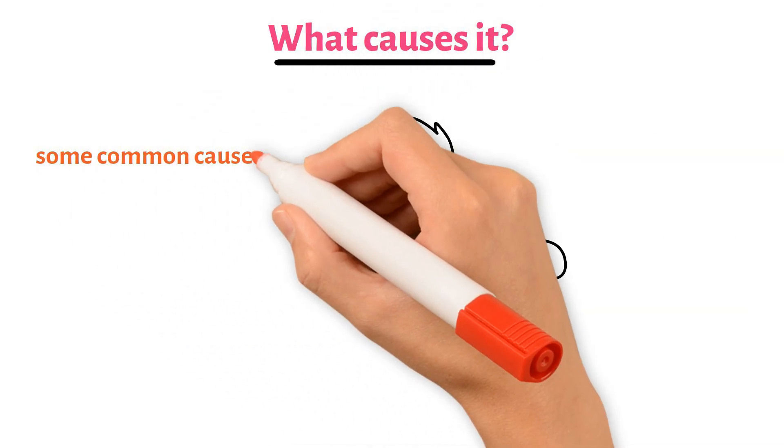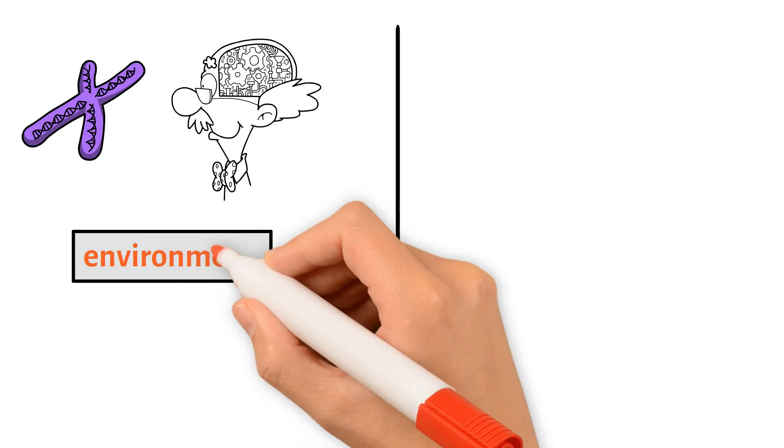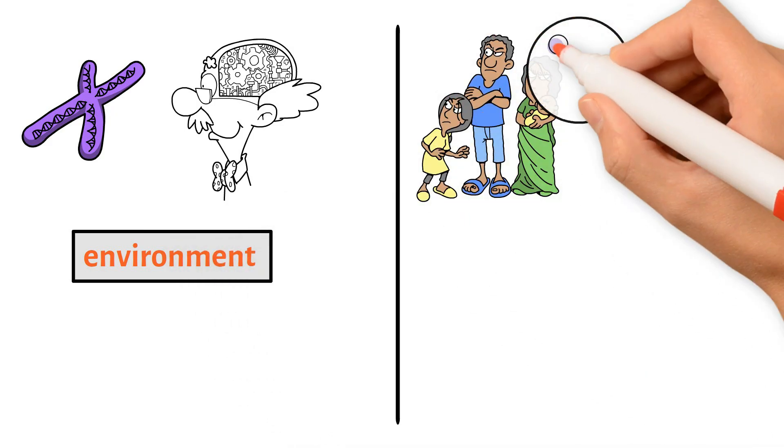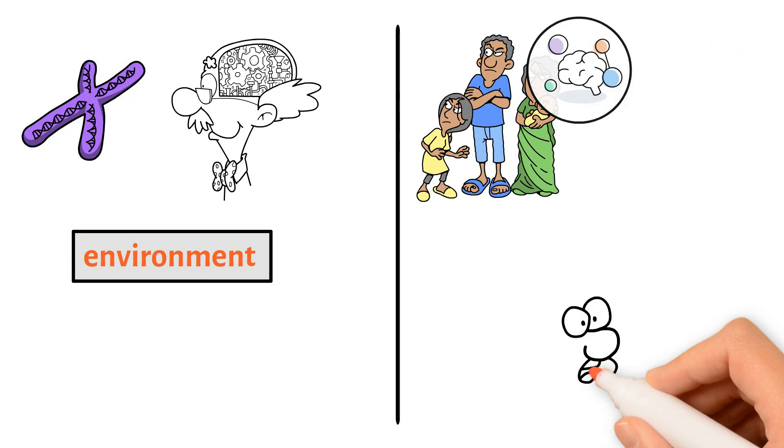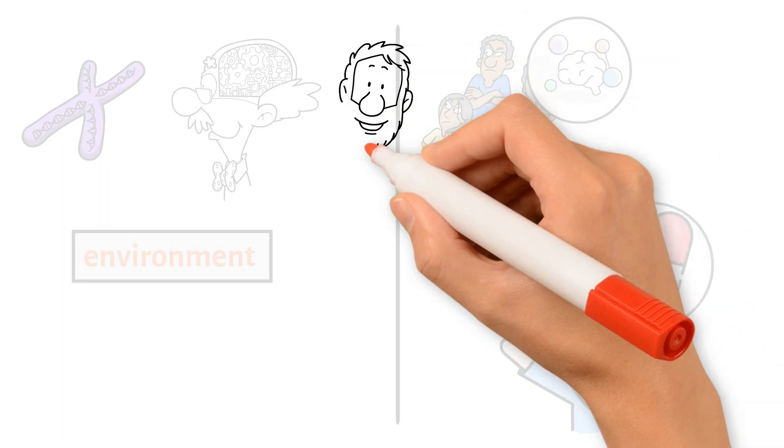Some common causes of schizophrenia involve a combination of genetics, brain chemistry, and environment. This means it can run in families, and changes in brain chemicals might contribute, as well as factors like stress or drug use.